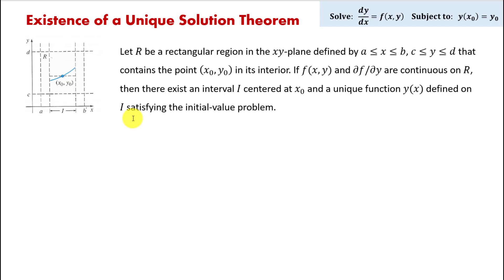Let's read the theorem. It's okay if it doesn't make total sense the first time we read it, but we're going to try to figure out what exactly it says. It says: let R be a rectangular region in the xy-plane defined by x being between values a and b inclusive, and y being between values c and d inclusive, that contains the point x sub 0, y sub 0 and its interior. All that is illustrated on the picture on the left.